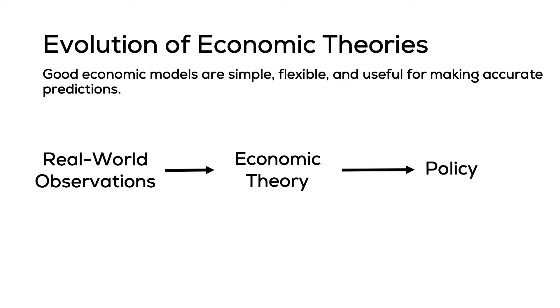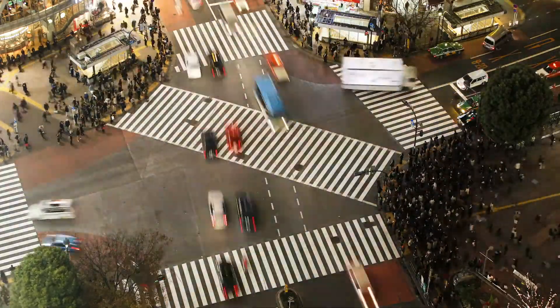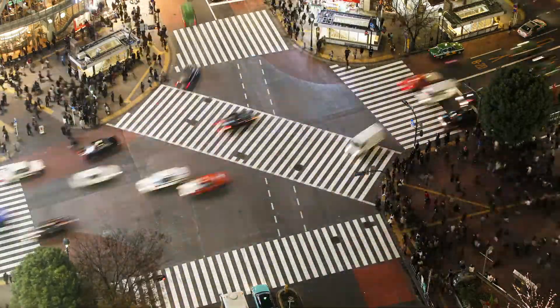The process does not stop there, though. Economists look at how the policy changed the real-world observations, and this creates a cycle where we're always refining our theories and our policies based on real-world observations. So when we talk about economic growth models, it is through this observation that the models were defined. As the world changes, our theories will have to change to reflect the new reality.